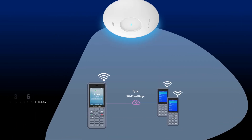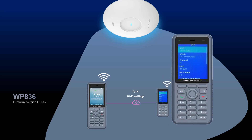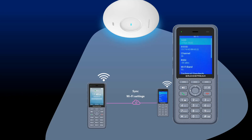Now let's look at the two factory-defaulted WP devices to see if they obtained the configuration information from the main phone. If you check the Wi-Fi status on one of the two new phones, you can see the phone has already obtained the Wi-Fi information from the first configured phone.